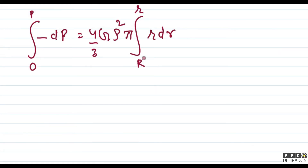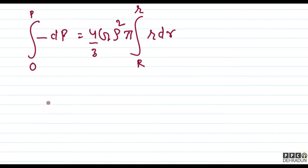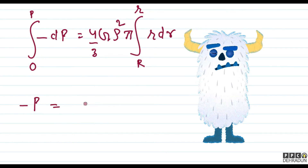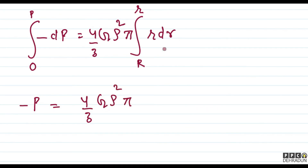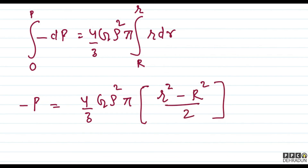Ek baar revise kara deta hun: jab small r equal to capital R ho, pressure 0 hai. Yahan se minus dp ka integration P ho jayega, value put karenge toh minus P equals (4/3) G rho squared pi multiplied by (r squared minus R squared) upon 2. Iska matlab P equals (4/3) G rho squared pi times (R squared minus r squared) upon 2.